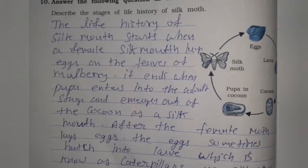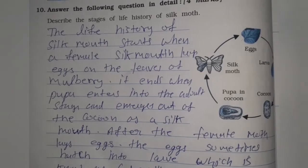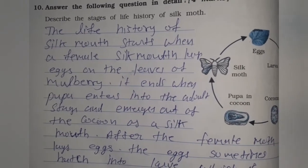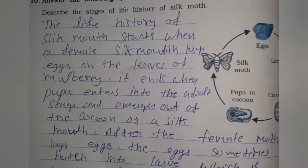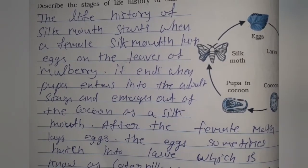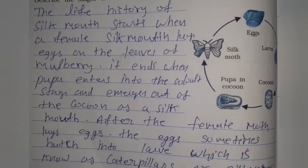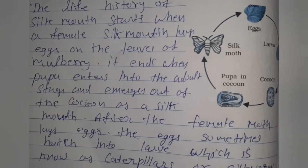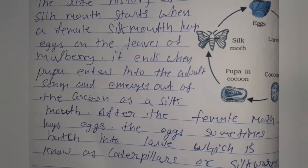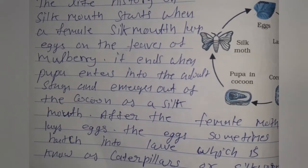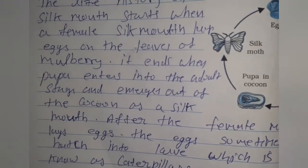The life history of the silk moth starts when the female silk moth lays eggs on the leaves of the mulberry tree. It ends when the pupa enters into the adult stage and emerges out of the cocoon as a silk moth. After the female moth lays eggs, the eggs hatch into caterpillars or silkworms.